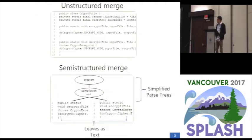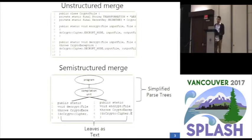To deal with these problems, researchers have proposed tools that use different strategies to boost integration effort and improve integration correctness. For instance, Unstructured Merge, which corresponds to the state of practice on merge tools, operates purely on plain text, and if two developers edit the text in the same text area, the tool notifies a conflict.